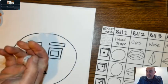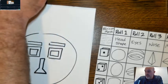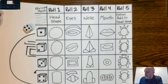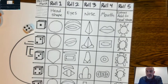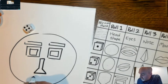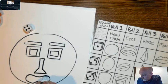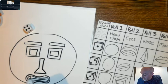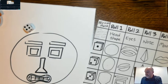Now onto the mouth. I rolled and ended up with a four. A four is that mouth right there with the teeth kind of closed. So I'll draw something like that for the mouth. And then there's a second line inside, and then the teeth — a line down the middle with some teeth like this. There's the mouth.